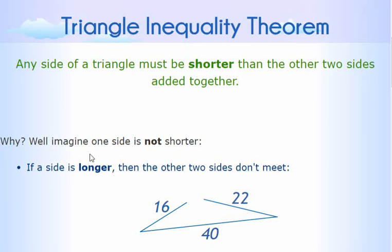Think about that. So here's an example here. So any two sides, any side of a triangle must be shorter than the other two sides added together.